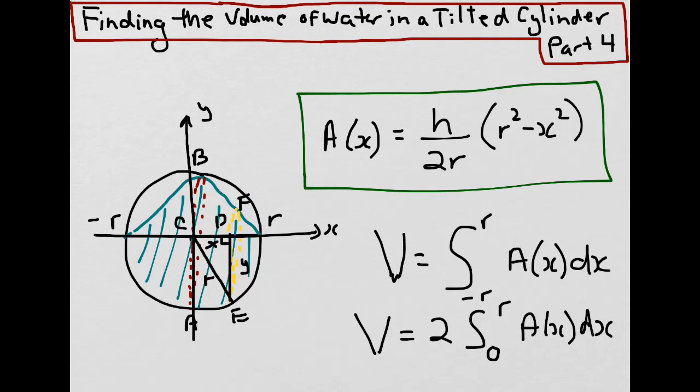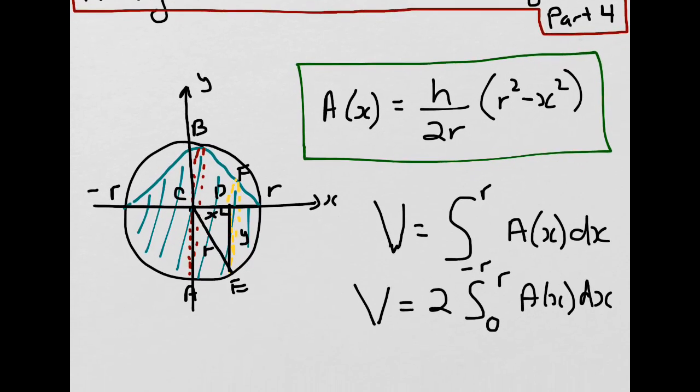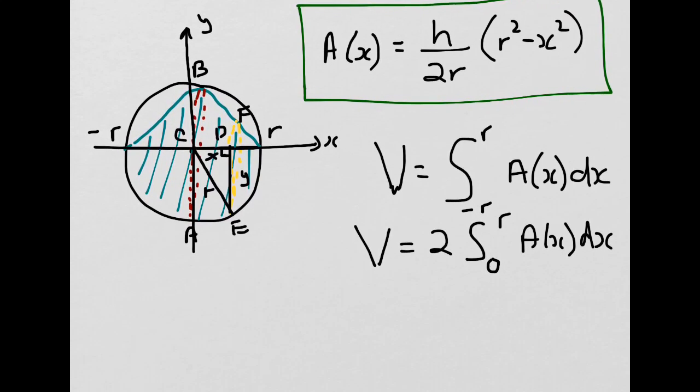Let's finish this problem by substituting our area function into our volume formula and solving the integral. Our volume would equal twice the integral from 0 to r of h over 2r times (r² - x²) dx.